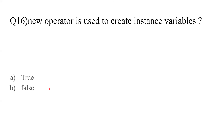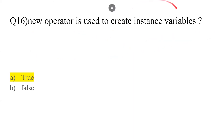The new operator is used to create instance variables — the answer is true. We use the new keyword whenever we create instance variables. For example: Scanner sc = new Scanner(System.in). Whenever you use the new operator you're creating a new instance variable. You can create instance variables using the new operator or using a constructor.